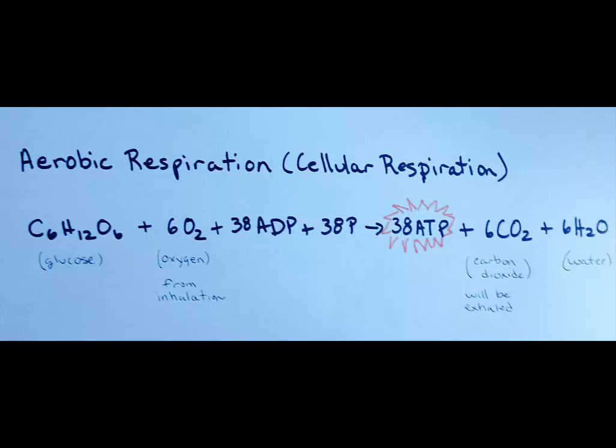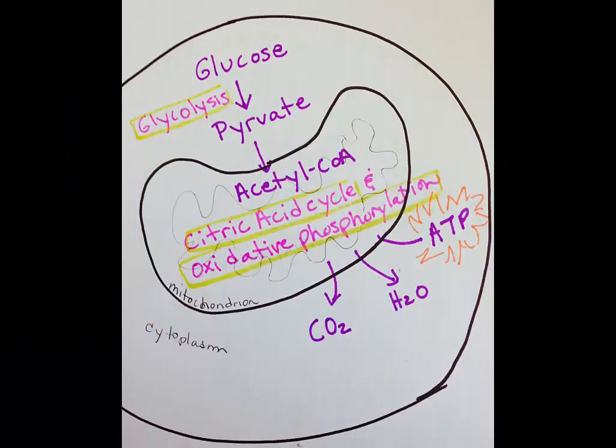Basically, the process consists of glycolysis in which a 6-carbon glucose molecule is broken down into two 3-carbon pyruvate molecules. This happens in the cytoplasm of the cell. Then, that 3-carbon pyruvate is converted into a 2-carbon acetyl-CoA. From there, the process will continue in the mitochondria of the cell.